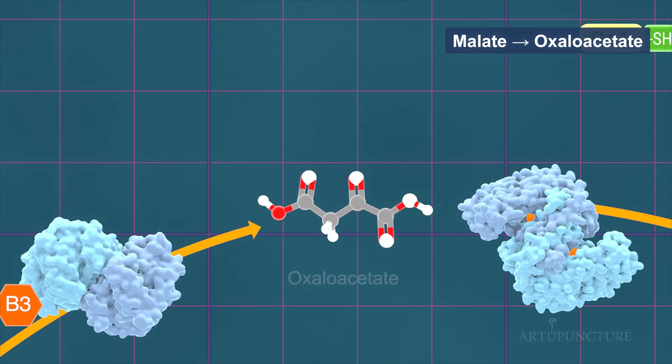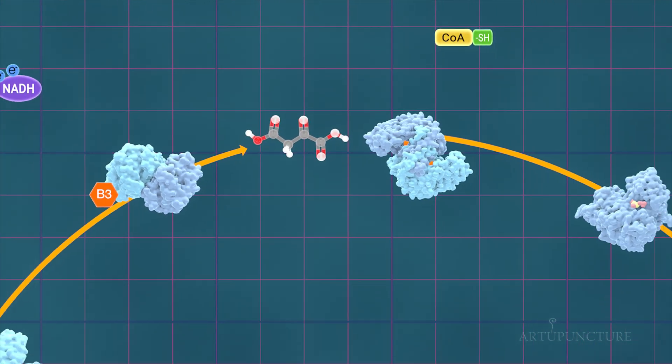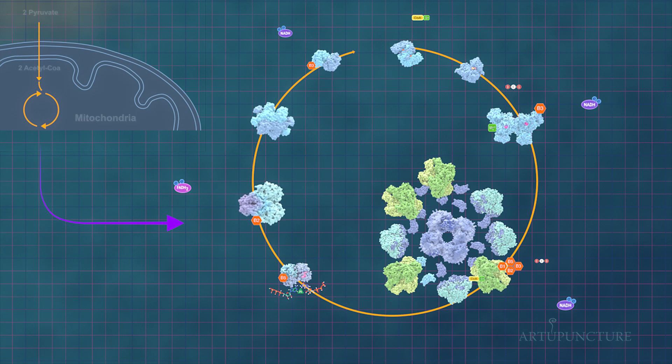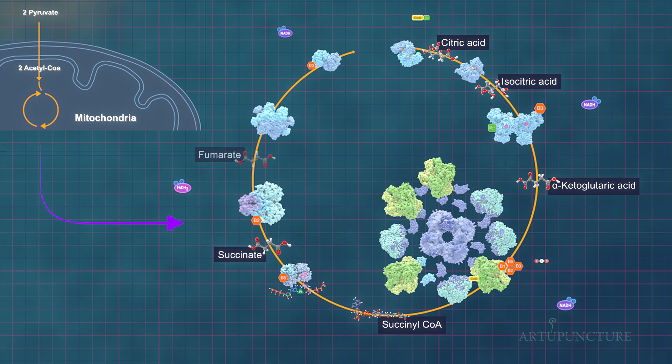And thus, the Krebs cycle completes its full circle, regenerating oxaloacetate to begin anew. This continuous and repeating process is essential for cellular respiration and sustained energy production.